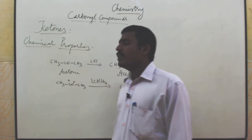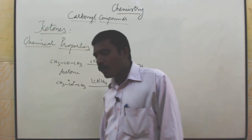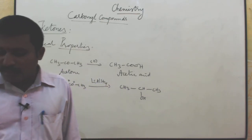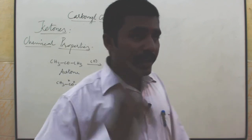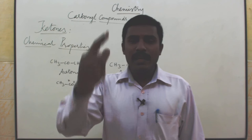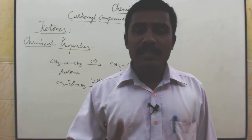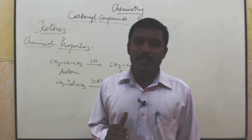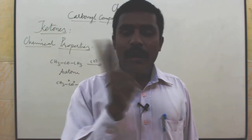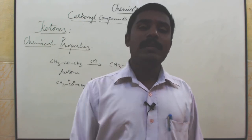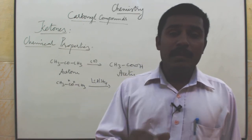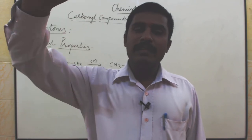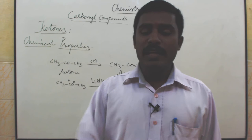Reduction reaction takes place using any one reducing agent like lithium aluminium hydride or sodium borohydride. Next one is Clemensen reduction and Wolff-Kishner reduction. Clemensen reduction: aldehydes or ketones are converted to hydrocarbon in the presence of zinc amalgam and concentrated HCl. Wolff-Kishner reduction: aldehydes or ketones are converted to hydrocarbon in the presence of hydrazine and sodium ethoxide — that is the only difference.